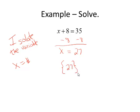And we write the solution inside a set of curly brackets. That denotes the solution set. Now we can check our equation, our solution, by plugging that value back in for x in the original equation. And we know that 27 plus 8 equals 35, so we found the right solution.